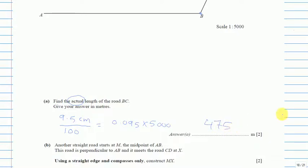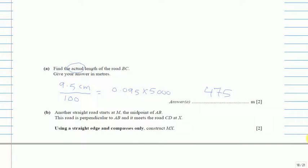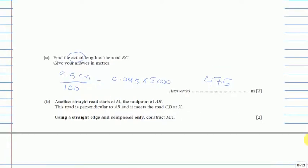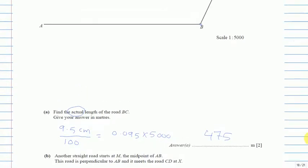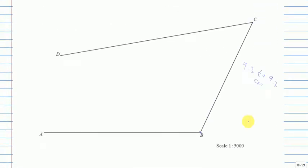The answer is in meters because we already divided by 100. Now Part B: another straight road starts at M, which is the midpoint of AB. The road is perpendicular to AB and meets road CD at X. Using a straight edge and compass only, construct MX. So we need to draw the perpendicular bisector of AB.